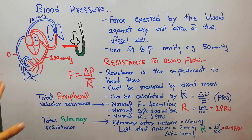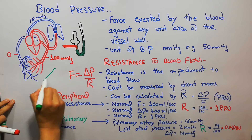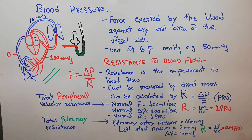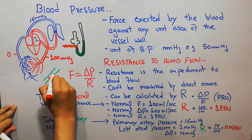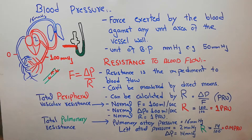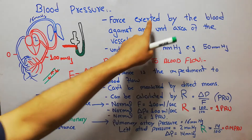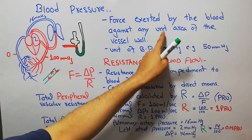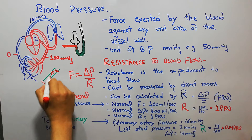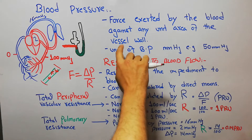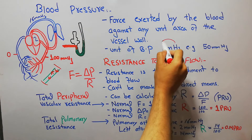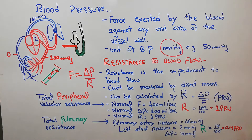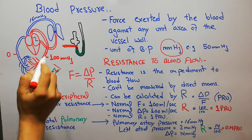When blood flows through arteries and veins, it exerts pressure on the vessel walls. For example, the blood inside a vessel exerts pressure on the vessel wall, and this pressure exerted by the blood against any specific unit area of the vessel wall is known as blood pressure. Its unit is millimeters of mercury.